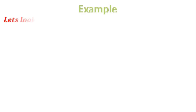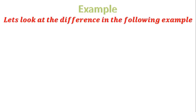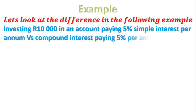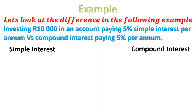What we're going to do is work through one example with compound and simple interest side by side. We're looking at the differences in the following example: investing 10,000 Rand in an account paying 5% simple interest per annum versus a compound interest account paying 5% per annum. We divide our screen in half — simple interest on the left, compound interest on the right.